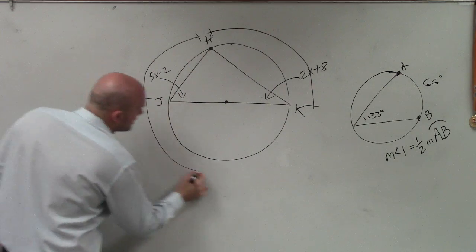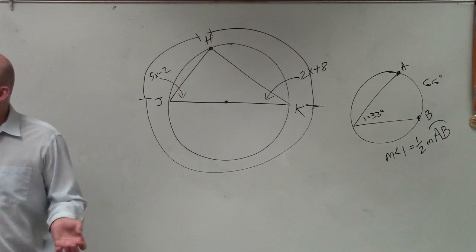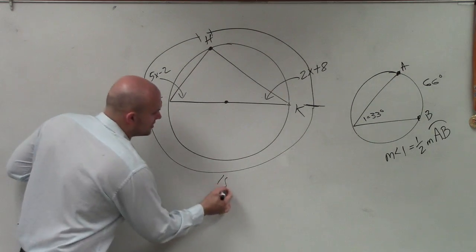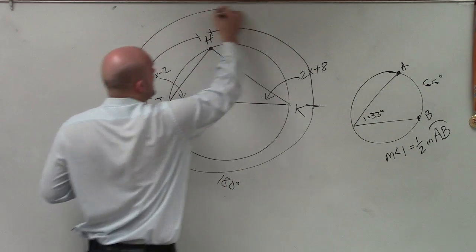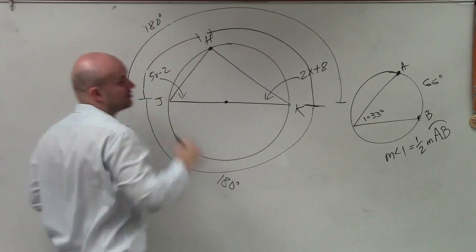Now, what we do know is this creates a semicircle, correct? And the semicircle is 180 degrees. So the measure of the arc is 180 degrees. So what that means is the measure of this arc is also 180 degrees, right? Because that's another semicircle.